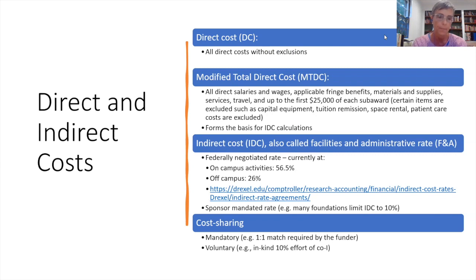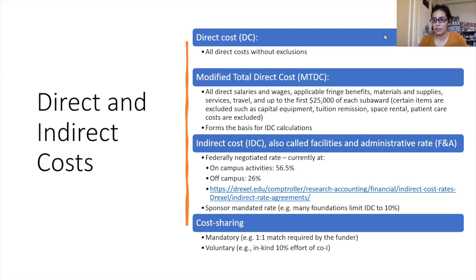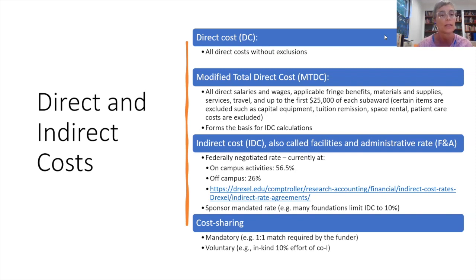A participant asks: if there's a PI from one university and a co-PI from another, will both universities' indirect costs be taken into account? Yes — if you have an investigator from another university, that investigator will be on a sub-award, and the sub-award slide addresses what that means for your indirect cost. Very good question.